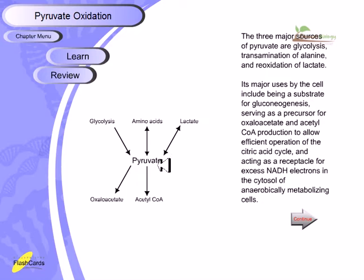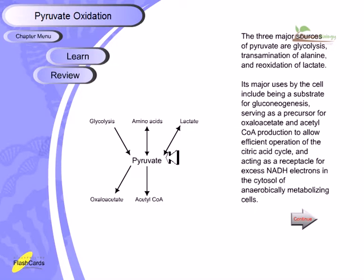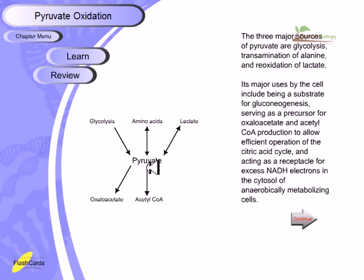These are the three important steps for obtaining pyruvate. Its major uses by the cell include being a substrate for gluconeogenesis — we can convert pyruvate back to glucose, the most important form of sugar in our body. It also serves as the precursor for oxaloacetate and acetyl-CoA production, which allows operation of the citric acid cycle, and it can act as a receptor for excess NADH electrons in the cytosol of anaerobically metabolizing cells.